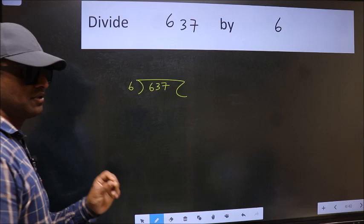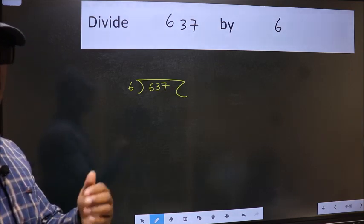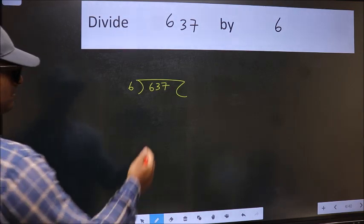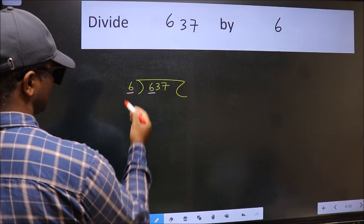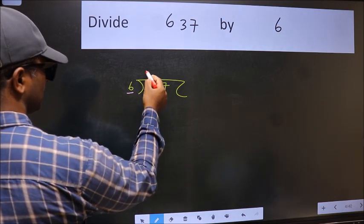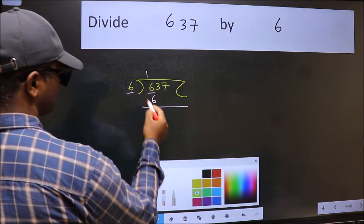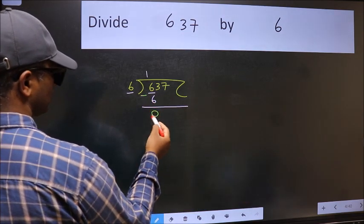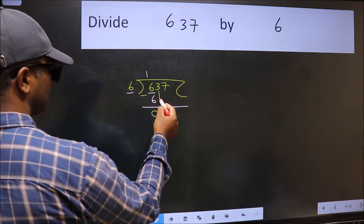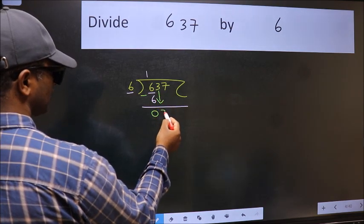This is step one. Here we have 6 and 6. When do we get 6 in the 6 table? Six ones are 6. Now subtract and we get zero. Bring down the next number, which is 3.